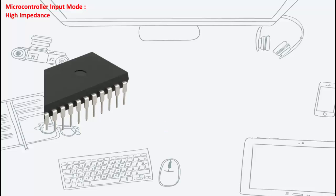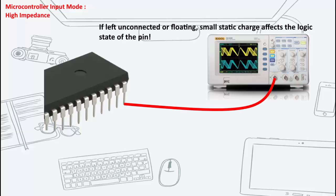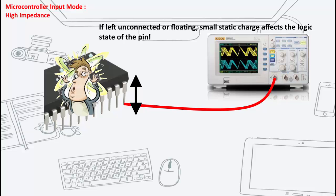If a high impedance pin is left unconnected or floating, then even small static charge present on surrounding objects can change the logic state of the pin. If you try to read the pin's corresponding bit, its state cannot be predicted. This may cause your program to go haywire if it depends on the input from that particular pin.